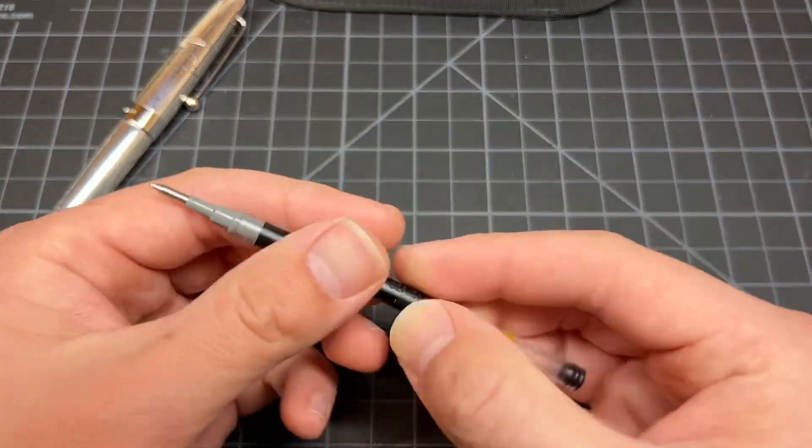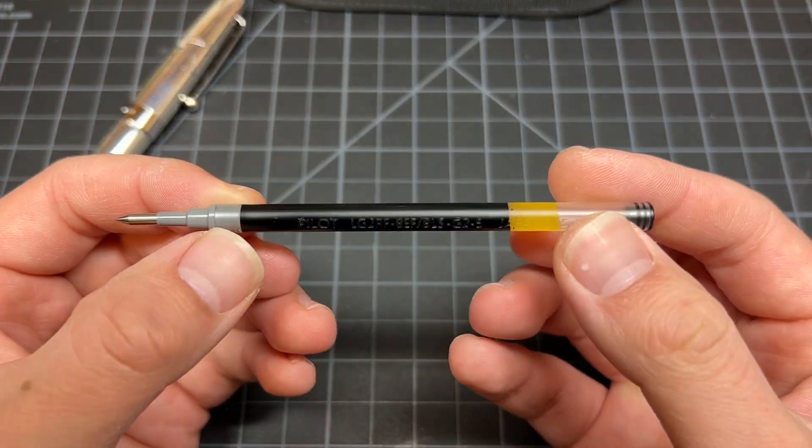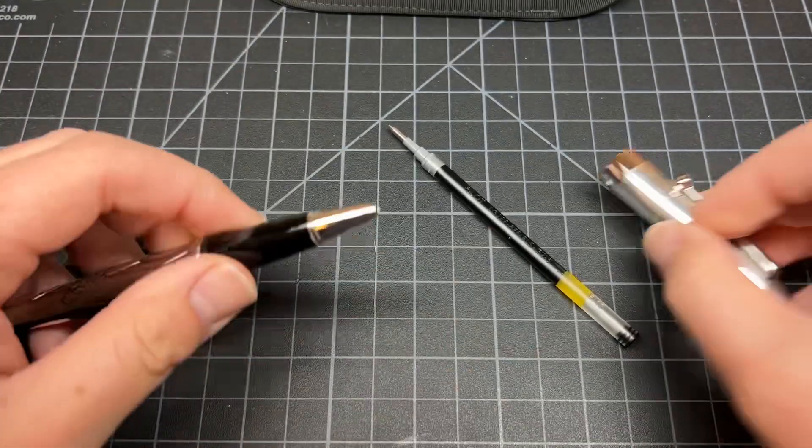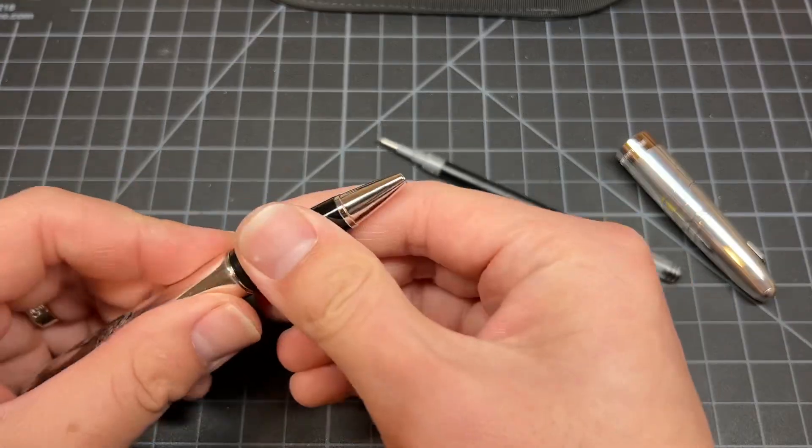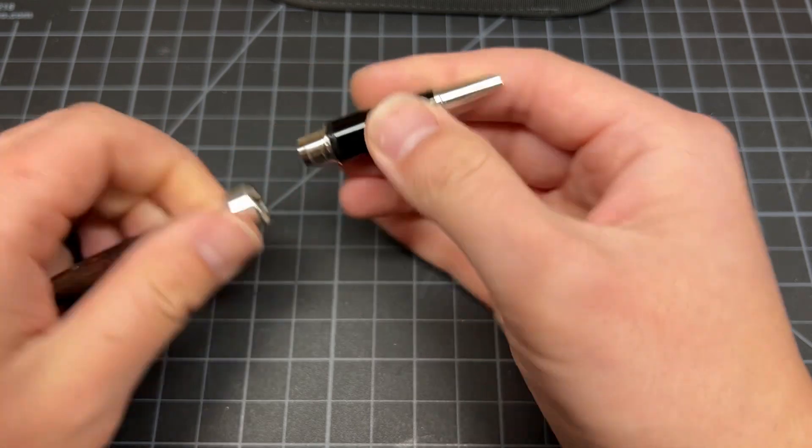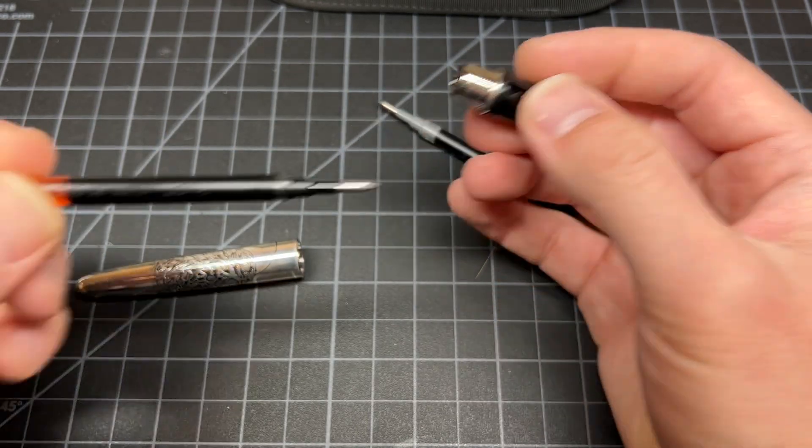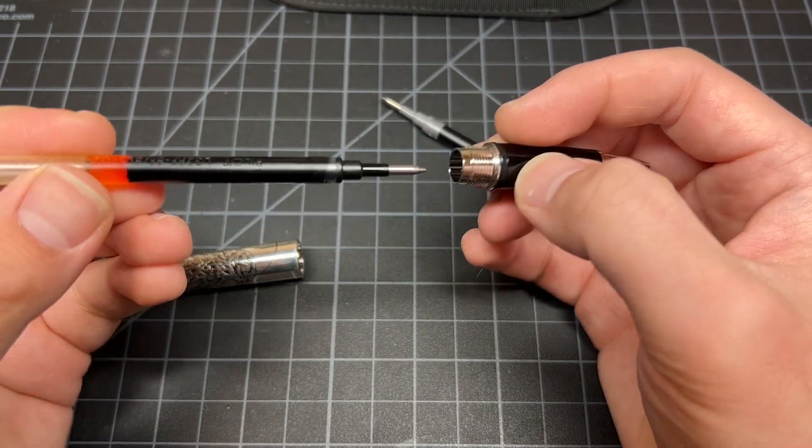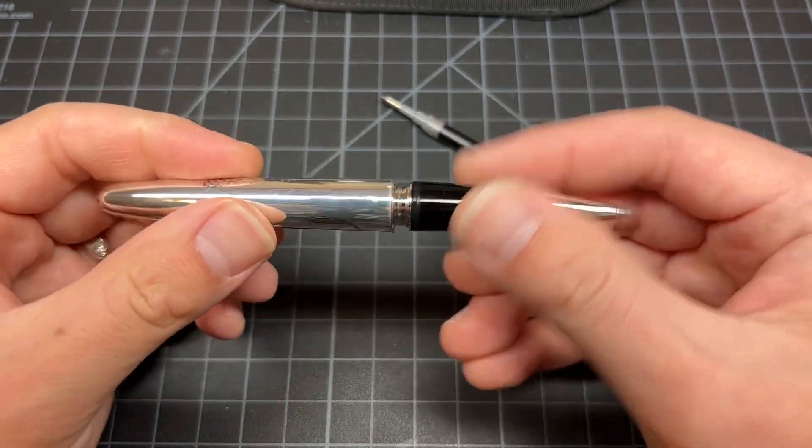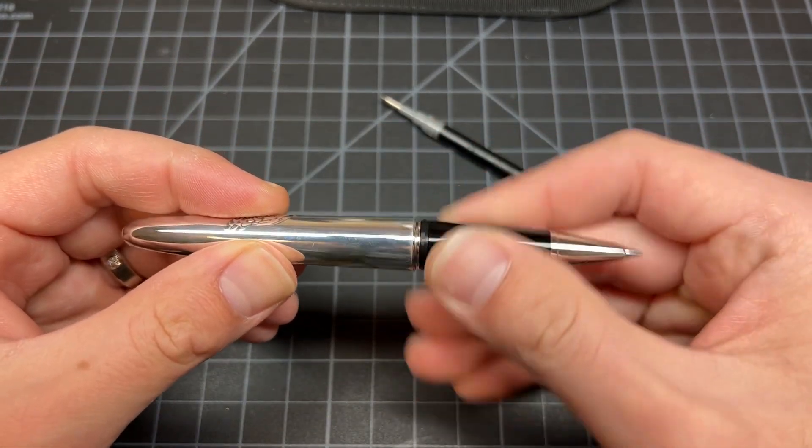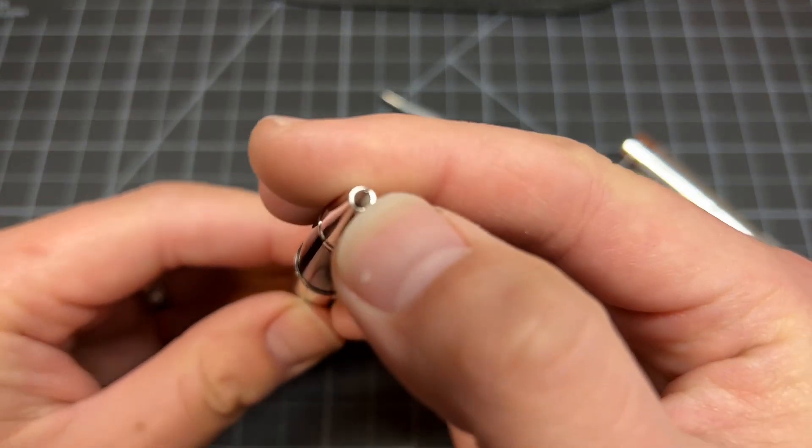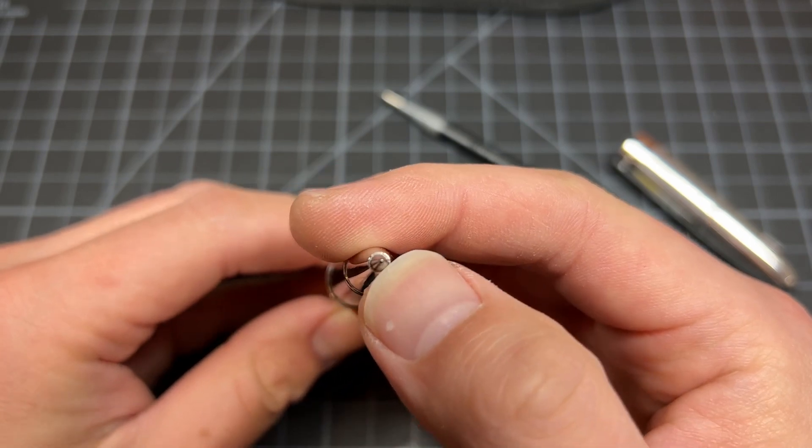So you guys are well aware of the Pilot G2 refill. It's a G2.5, yeah. And this one's a .7. Let's just put that in there and screw it on, screw the body on, and let's see how it fits at the tip. Very good, no gap.